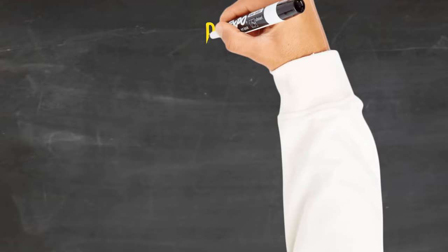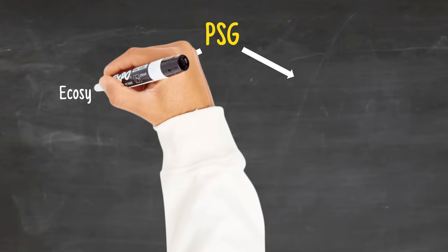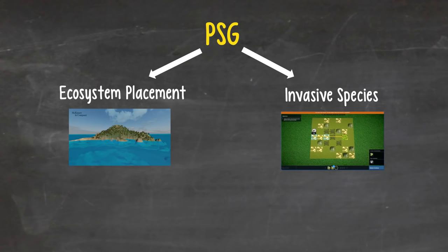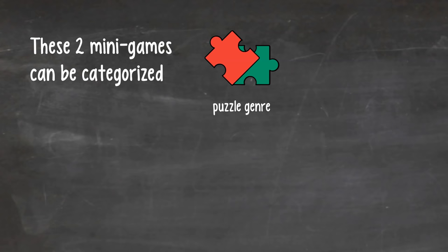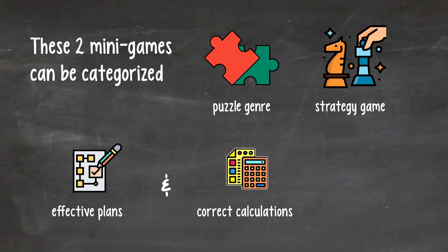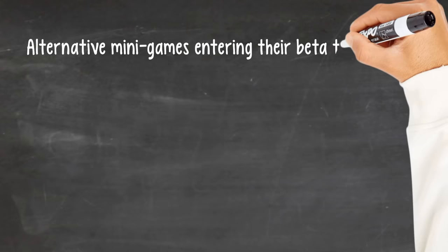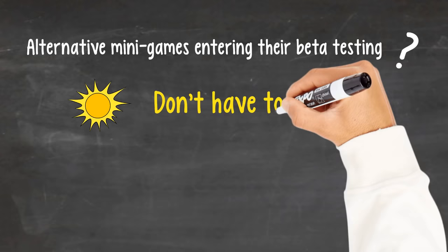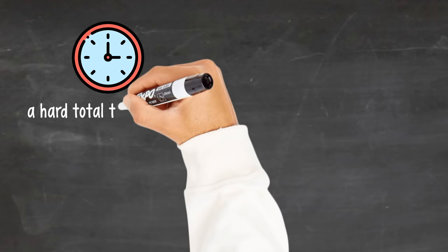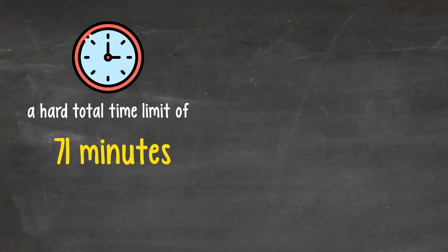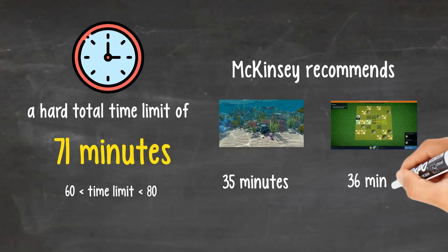You'd actually spend more time planning and calculating on that scratch paper than actually playing the game on the computer screen. Part 2. The mini-games of the PSG. The PSG is made of two mini-games called Ecosystem Placement and Invasive Species. For the sake of better reflecting the objectives of these games and for better synergy with other literature, I'll call them Ecosystem Building and Plant Defense. These two mini-games can be categorized into the puzzle genre, with perhaps a slight blend of strategy games. Both mini-games are currently played within a hard total time limit of 71 minutes. Over the years, there have been reports of this hard limit being between 60 and 80 minutes. You are free to allocate your time however you like.